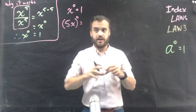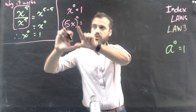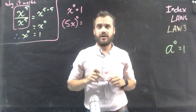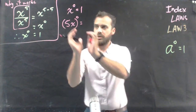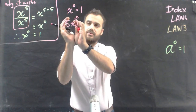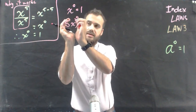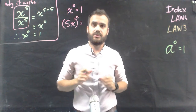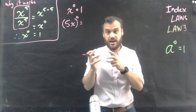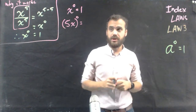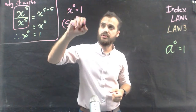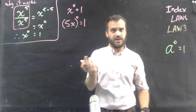Second example: 5 to the x, all to the power of 0. I'm taking something — two things — but I'm raising them to the power of 0. And anything raised to the power of 0 is equal to 1. Easy.